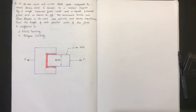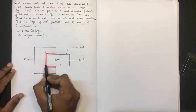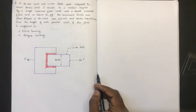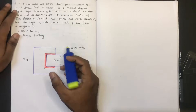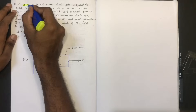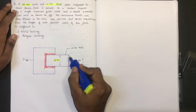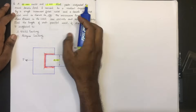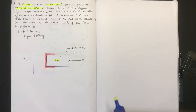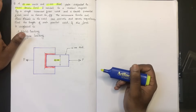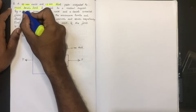This is a problem. In the video, it is a problem. Transfers and Parallel Fillet — this is an 80mm wide and 12mm thick plate. This is a 12mm thick plate subject to axial tensile load. This is a tensile loading. The perpendicular load is different. It is welded to a vertical support by a single transverse fillet.